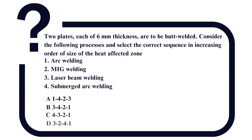The question is: two plates each of six millimeter thickness are to be butt welded. Consider the following processes and select the correct sequence in increasing order of size of the heat affected zone — first arc welding, second MIG welding, third laser beam welding, and fourth submerged arc welding.